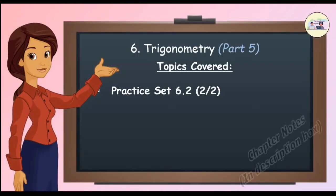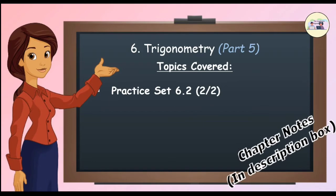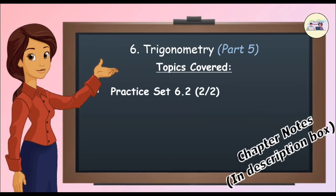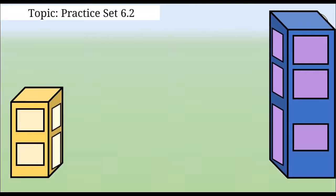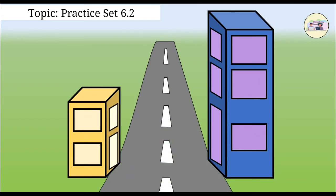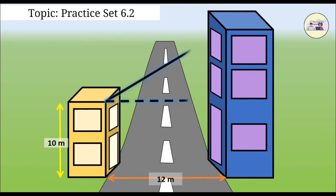Trigonometry, Practice Set 6.2, Question 3. Two buildings are facing each other on a road of width 12 meters. From the top of the first building, which is 10 meters high, the angle of elevation of the top of the second building is found to be 60 degrees. What is the height of the second building?